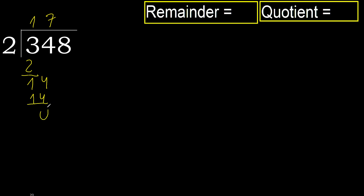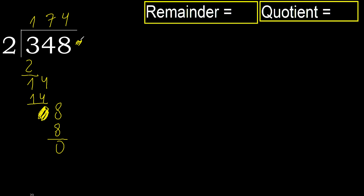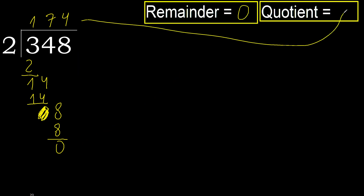Next. Eliminate 0. Bring down 8. 2 multiplied by 4 is 8 — 8 is not greater. Subtract. That is not a number, therefore finish it. 348 divided by 2 is 174.